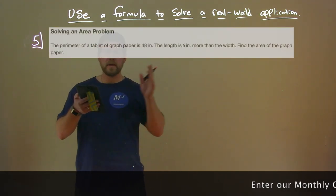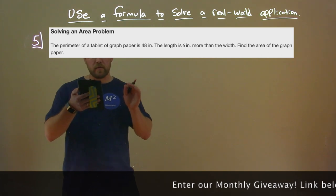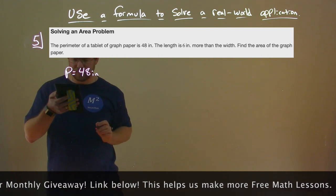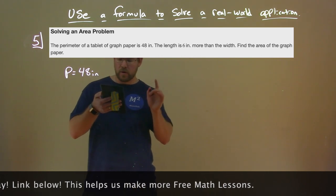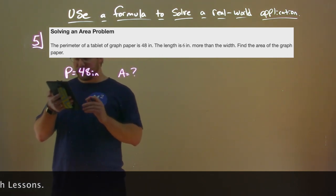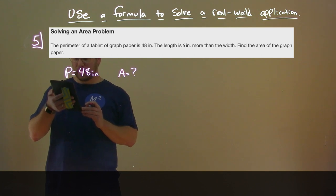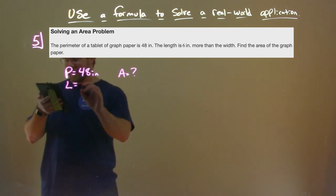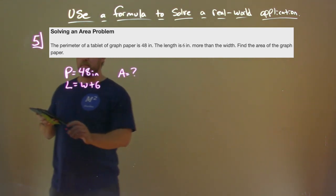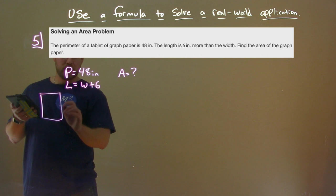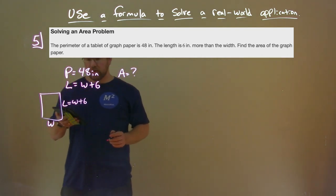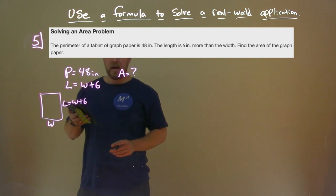Now we're going to solve an area problem. The perimeter of a tablet of graph paper is 48 inches. The length is 6 inches more than the width, and we want to find the area of the paper. So L equals W plus 6. We have a picture of the paper with width W and length L equals W plus 6. We'll find L and W first, then use them to find the area.